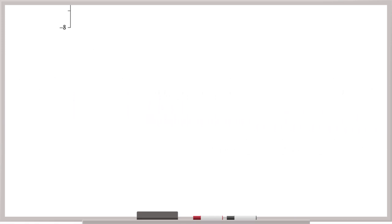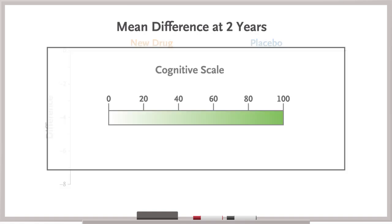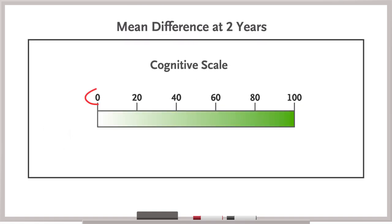The primary outcome is the mean difference at 2 years from baseline in performance on a cognitive scale, with scores that range from 0 to 100, with higher scores indicating better function.